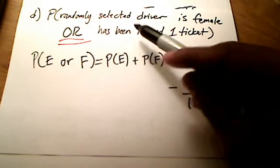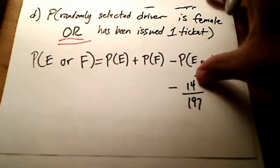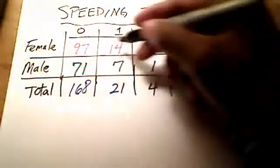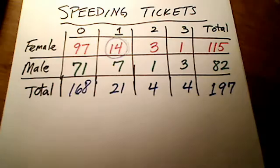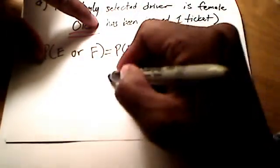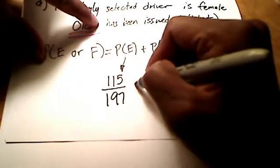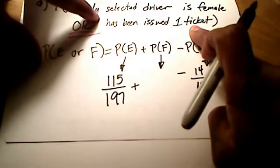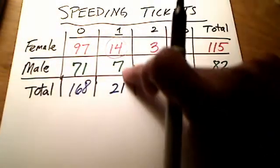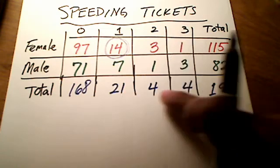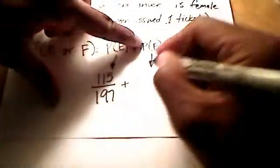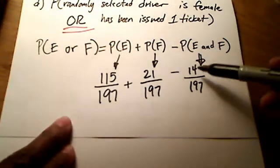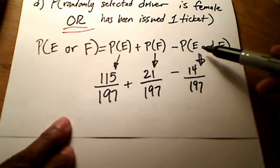Now, let's treat E as randomly selecting a female driver, which we found earlier. That's 115 out of 197. How about randomly selecting somebody who has just been issued one ticket? That's a total of 21, so I'll put 21 over 197. And don't forget to take away this 14 over 197, because that's where they overlap.